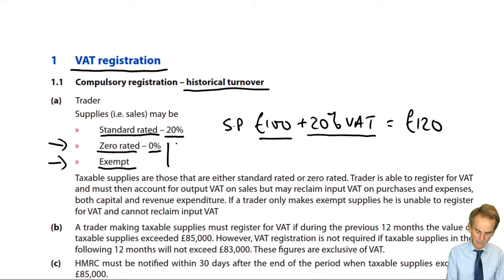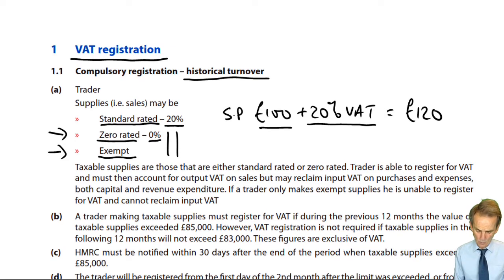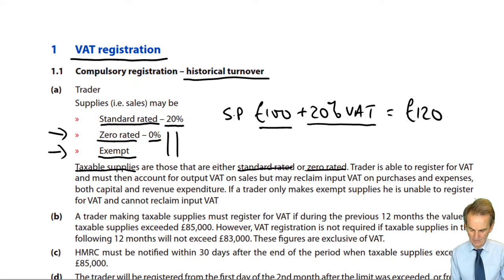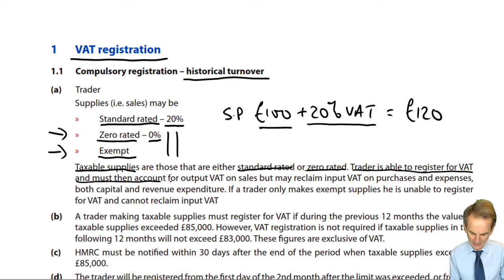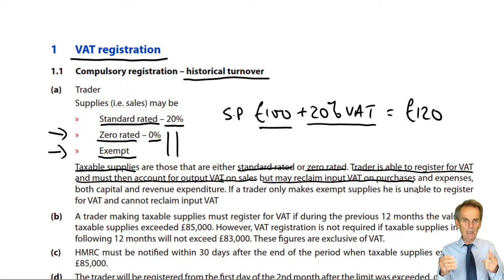It still begs the question as to why we bother to differentiate between an exempt supply and a zero rated supply. In fact, this is an absolutely critical issue. Taxable supplies are those that are either standard rated or zero rated. A trader is able to register for VAT and must then account for output VAT on sales, but may reclaim input VAT on purchases. We've talked about a trader selling to an individual consumer — an individual member of the public — who is not registered for VAT.